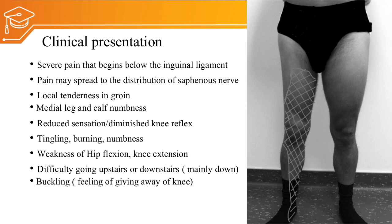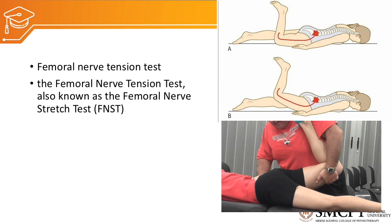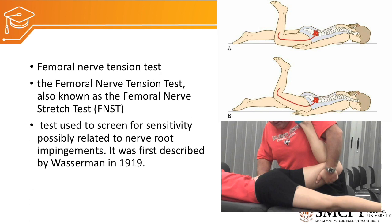The femoral nerve tension test — also called the femoral nerve stretch test — is used to screen for sensitivity possibly related to nerve root impingement of the femoral nerve. When performed, there will be tingling and numbness over the L2, L3, L4 dermatome levels, indicating compression or impingement of the femoral nerve. It was first described by Wasserman in 1990.